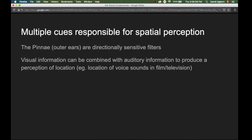Another cue that we use is visual information. Visual information can be combined with auditory information to produce a perception of location. An example of this that will be familiar to many of us is our perception of the location of voice sounds in film or television.